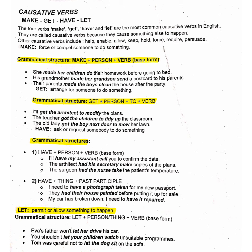There are four kinds of causative verbs: make, get, have, and let. These four verbs are the most common causative verbs in English. They are called causative verbs because they cause something else to happen. So let's start.